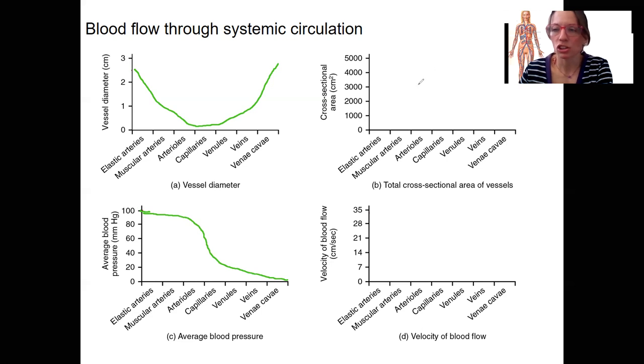What happens to cross-sectional area? What do I mean by that? The total area that the blood is flowing through. That's a little different than—it's partly dependent on diameter, but it's also dependent on the number of tubes that you have, right? That's what area is going to be, both diameter and number of tubes. So we are going to have some baseline area, and actually it's going to go way up at the capillaries.